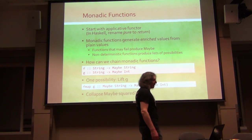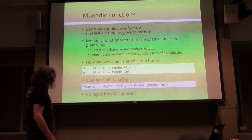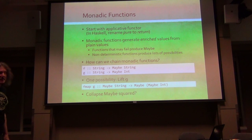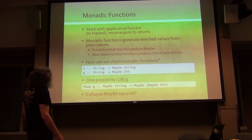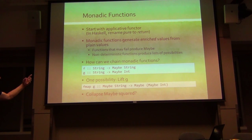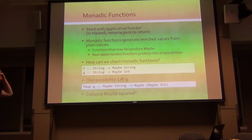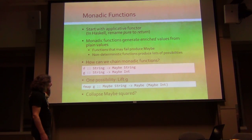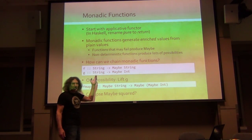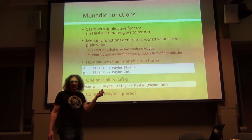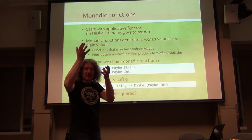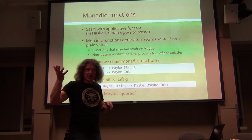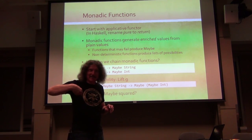But the next function doesn't want to take an async as an argument - it wants an actual value. Every monad is also an applicative functor. So we can try this trick: we can lift the second monadic function so that it takes a monadic value. But then what it returns is monadic-monadic squared - a double-wrapped monad.